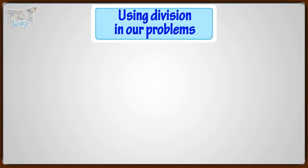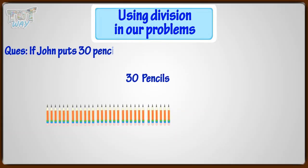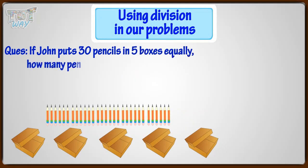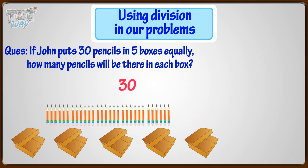If John puts 30 pencils in 5 boxes equally, how many pencils will be there in each box? Here, John is asked to distribute or divide 30 pencils into 5 boxes. So he will divide 30 by 5.